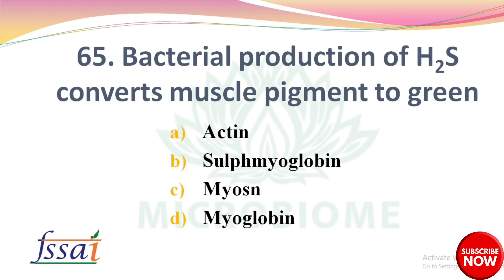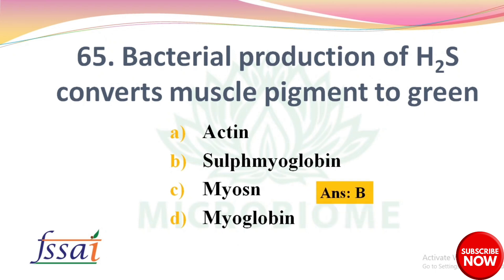Bacterial production of H2O2 converts muscle pigment to green — what is the pigment called? Options: A) Actin, B) Sulfmyoglobin, C) Myosin, D) Myoglobin. The right answer is option B: Sulfmyoglobin.